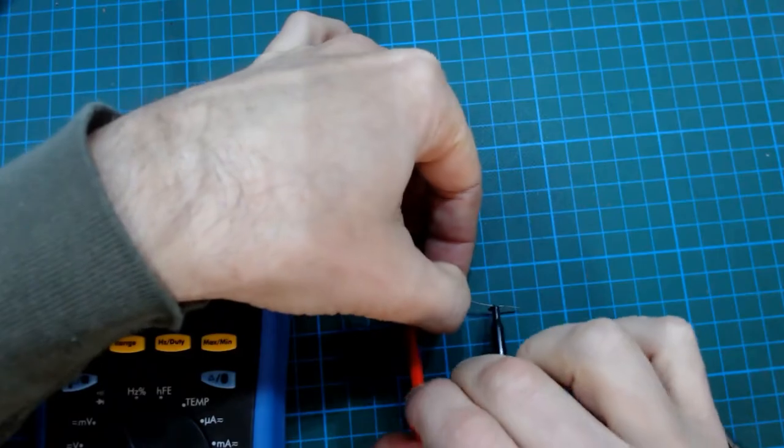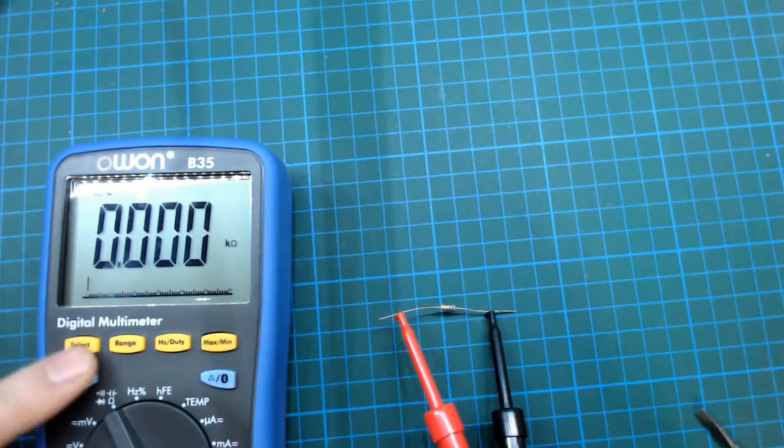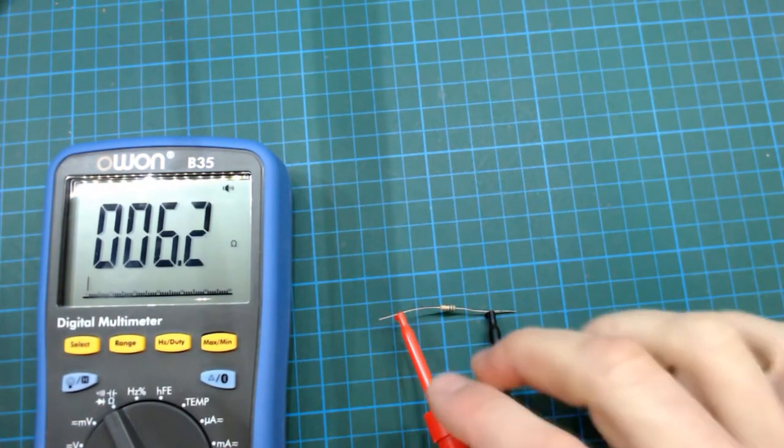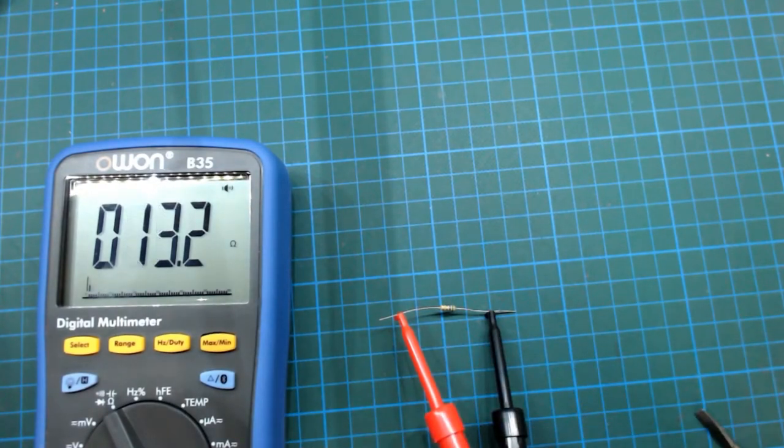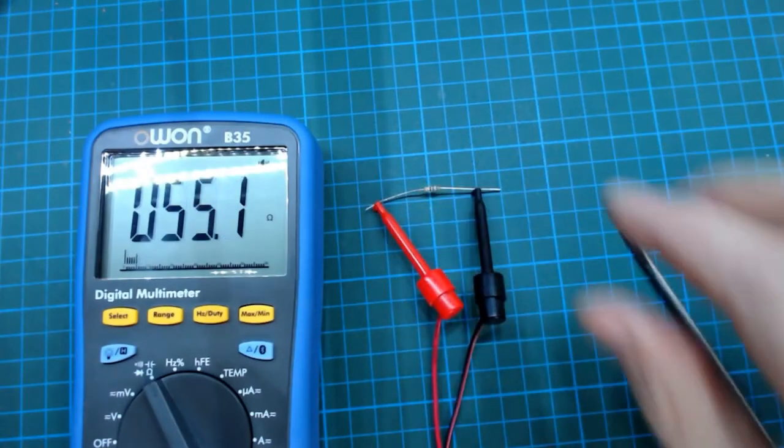Let's do a continuity test on this 6 ohm resistor and you can hear that it's got a continuity tone through it. But let's do a continuity test on this 55 ohm resistor and you can hear that there's no continuity tone.